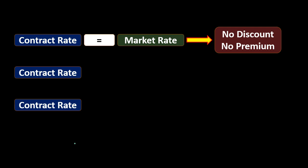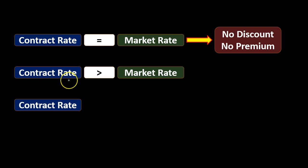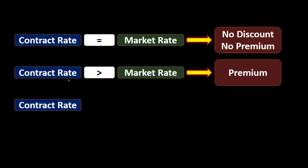If there's a time delay between the creation of the bond and its issuance, it's more likely the contract rate won't match the market rate. One scenario is that the contract rate — the rate printed on the bond — is greater than the market rate. The market rate is something we determine based on what other similar securities are doing, whereas the contract rate is physically written on the bond. If the contract rate is greater than the market rate, the bond is a good deal, and we're going to issue it at a premium.